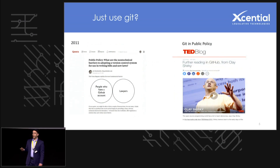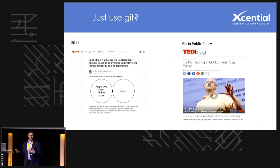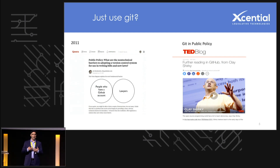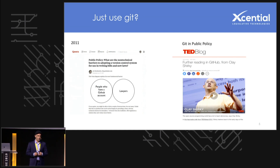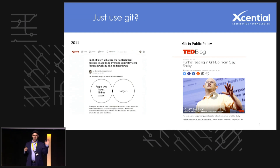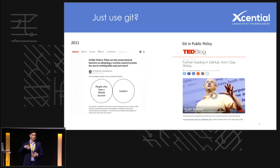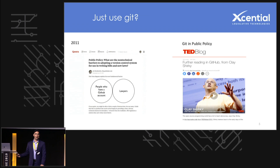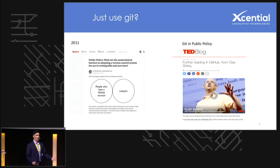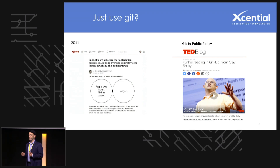The question of what you should do for version control for the law — I hope your first answer wasn't just 'use Git,' because there are a lot of processes that make standard version control for computer code not really applicable for legal documents. In 2011, I put together a Venn diagram showing people who are lawyers and people who have GitHub accounts. At the time, the intersection could arguably have been just me. Since then, more lawyers have joined GitHub, but still the community of people who understand the traditions and processes of the law and also understand Git and version control is not that large. Part of what I'd like to do today is increase that community.